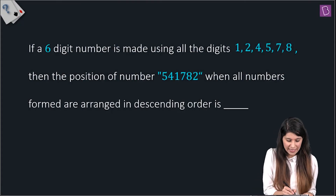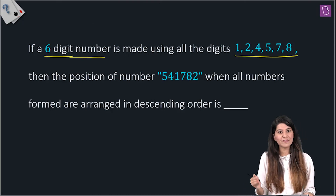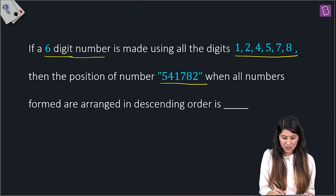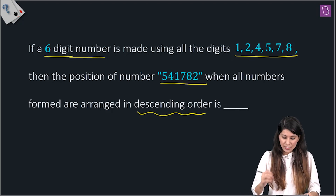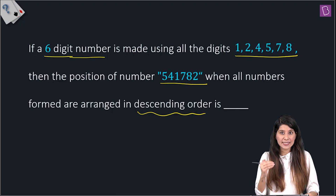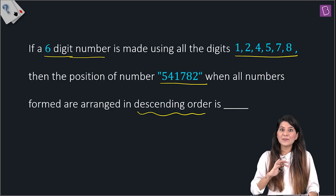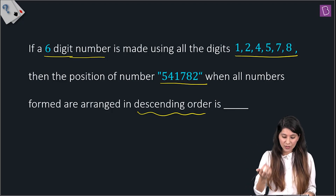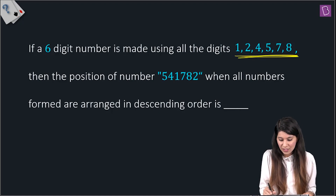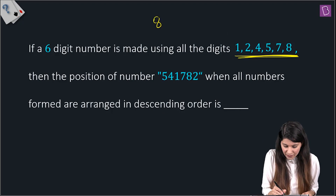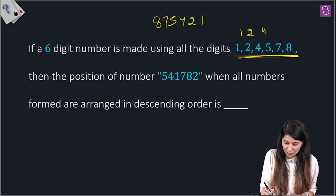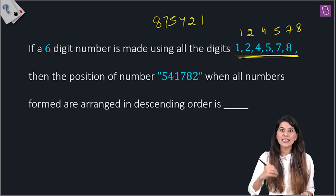In this question, a six-digit number is made using all digits 1, 2, 4, 5, 7, 8. We need to find the position of 541782 when all numbers formed by these digits are arranged in descending order. In descending order, the very first number would be 875421 and the last would be 124578.